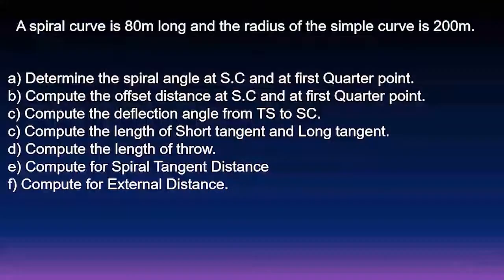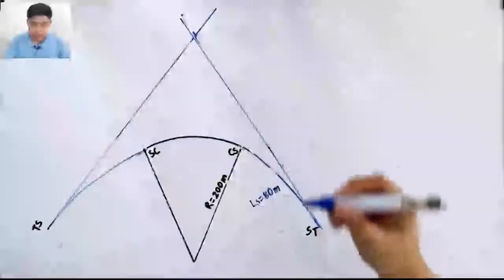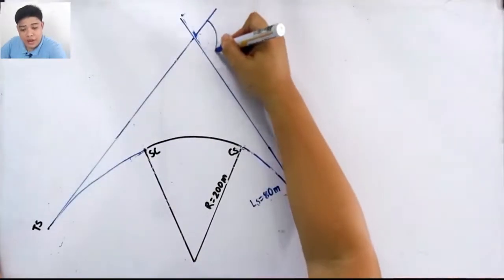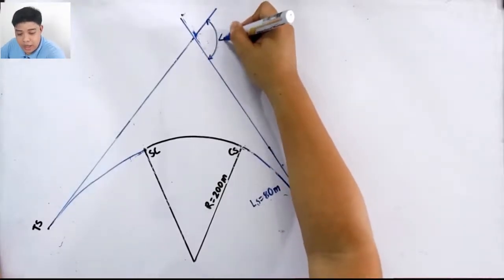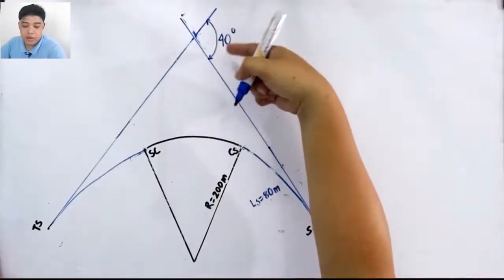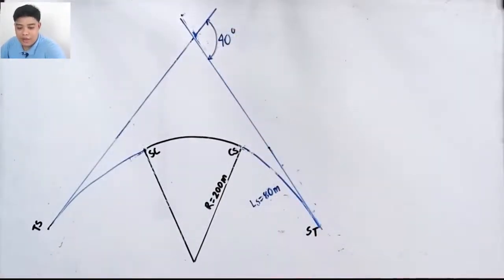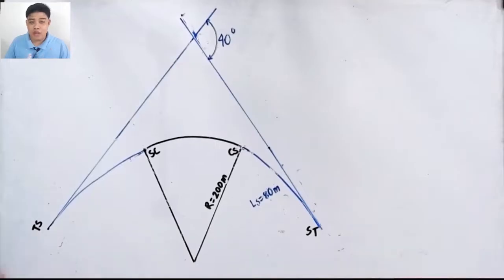This is the continuation of our problem solving in spiral. If you haven't watched the previous video, watch it first. In our problem, the radius of the circular curve is 200 meters and the length of the spiral is 80 meters. One given I forgot to mention is the intersection angle of the tangents at TS and ST, which is 40 degrees. Note the figure is not to scale.